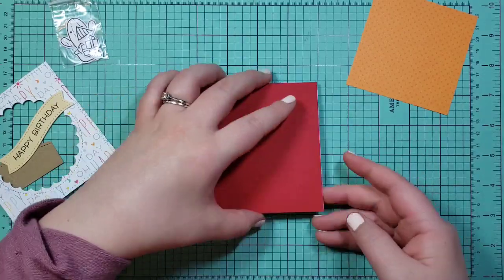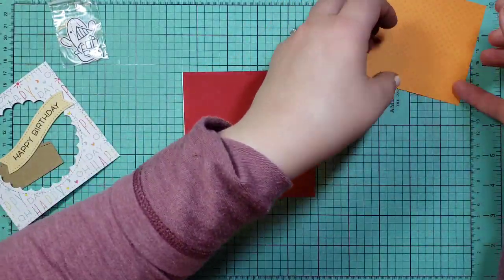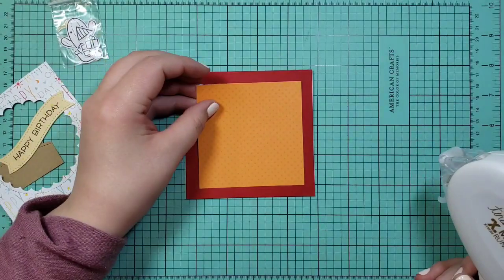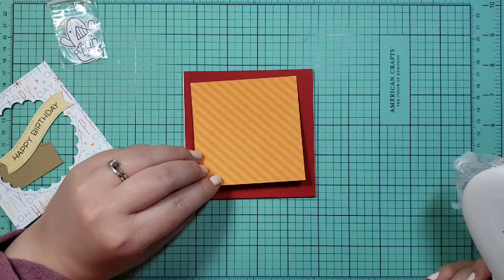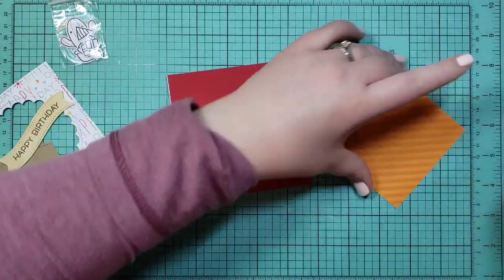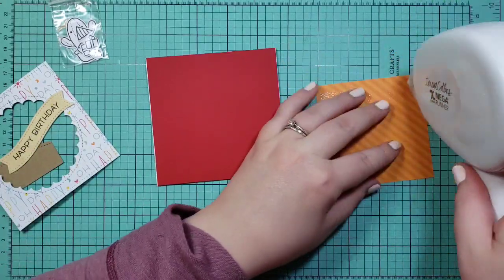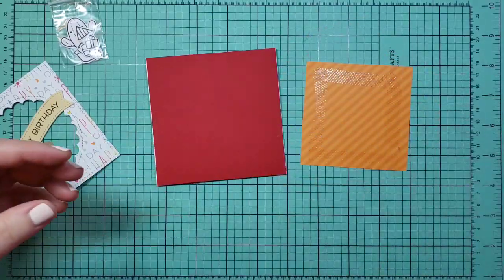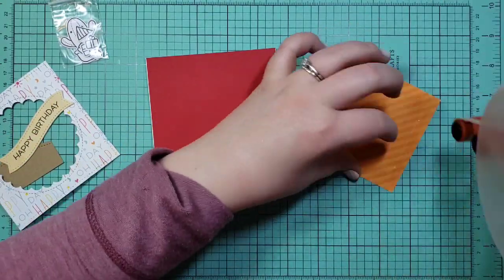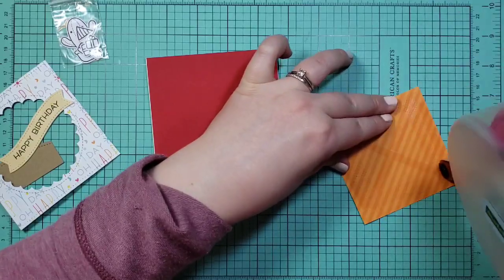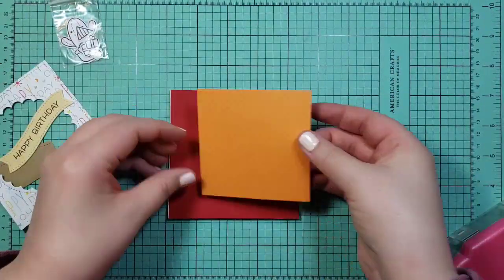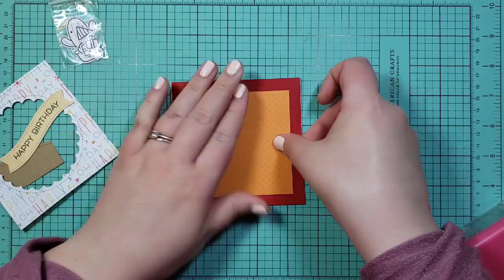I'm just sticking down the red panel to the whole card base, and then I'm kind of waffling between the dots and the stripes. The dots are on the sample card, but I finally went with the dots. I think the stripes may have been a little bit too much for the Oh Happy Day scalloped piece that we're going to put on top, so the dots are a little more subtle for the background, so I just centered that.